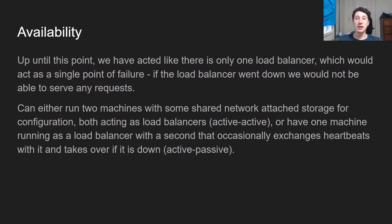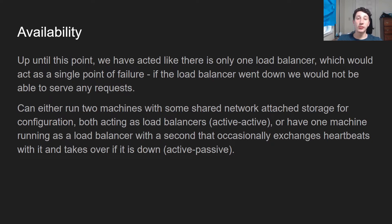Generally speaking, there are two ways of doing high-availability load balancing: active-active and active-passive. Active-active is where you have multiple load balancers running at once, all routing requests at the same time, sharing the same configuration state — probably through something like network-attached storage. However, if both are running at close to full capacity and one goes down, the other might become overloaded. Active-passive has one machine as the only active load balancer and a second one just sitting there sharing configuration state and waiting, sending heartbeats between them. If the active one goes down, the passive takes over — and there would be some methodology against split-brain, like using an epoch number or a fencing token.